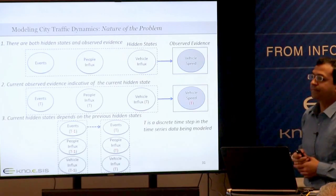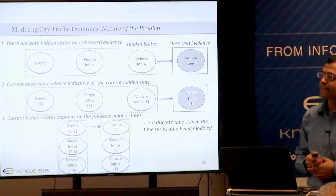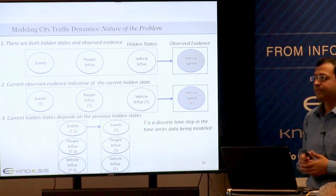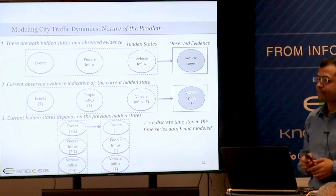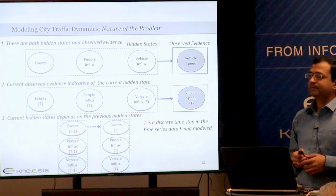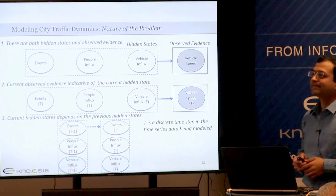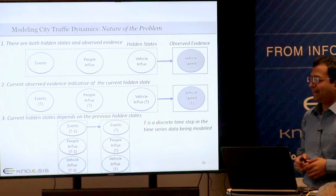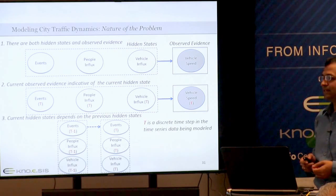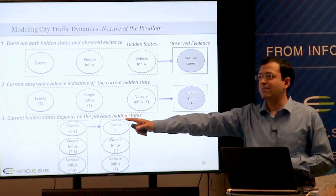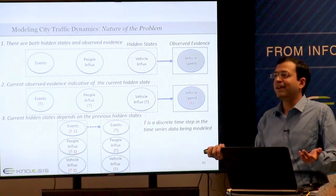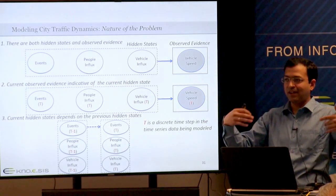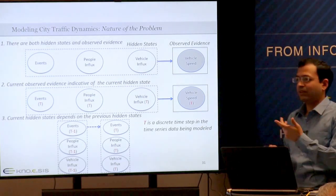A committee member raises the concern: with three hidden variables and one observed variable, how can you argue that this effectively models the problem? The presenter clarifies: with three hidden states, we simplify by using just volume, which directly influences speed. We use a simpler mathematical model to capture the complex real world—it would be impossible to model all hidden variables with available observations. Another way of putting it: we don't have enough information to discriminate among finer details, so we lump them together into volume, since they all impact the observed thing.